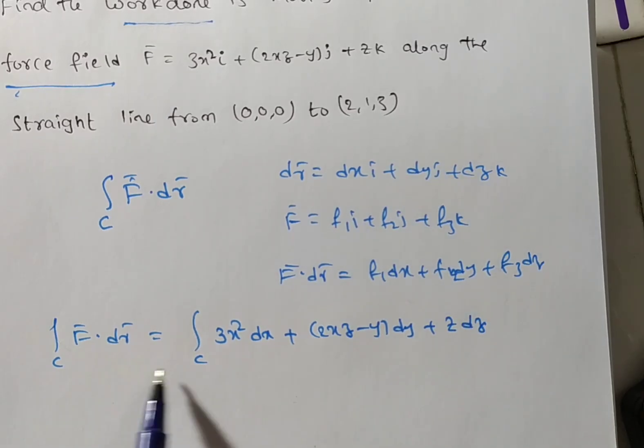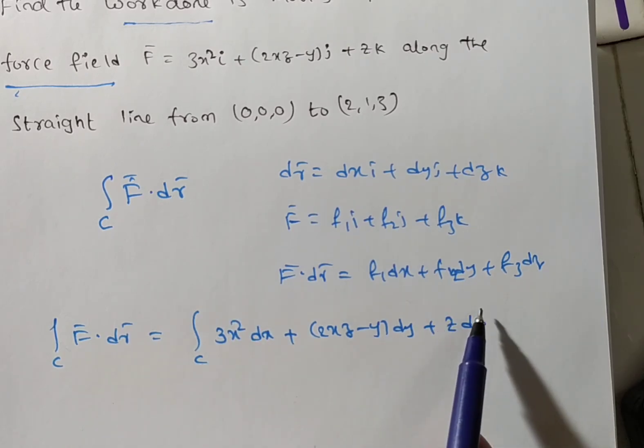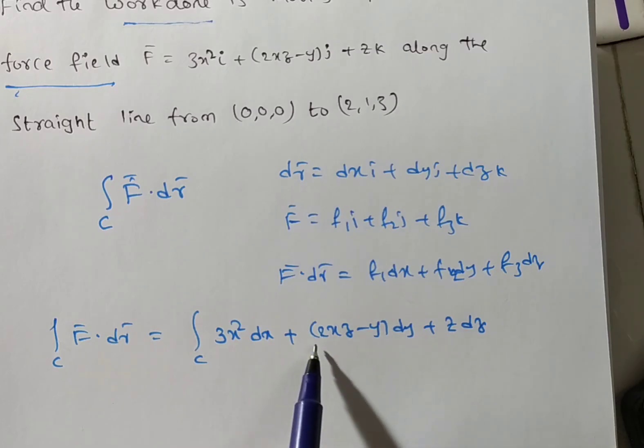Now, you observe this is nothing but a line integral form. Single integration is there, so line integral. Line integral we can separate each term. Generally, if we separated this one you can integrate with respect to x. This one you can integrate with respect to z. But what about this? Can you integrate this one? No, it is not possible in this case.